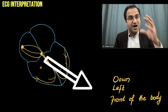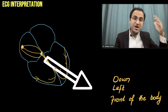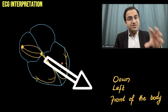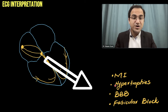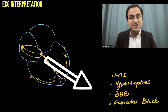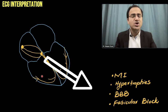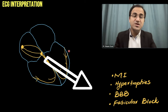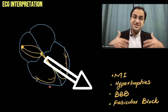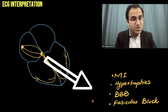Whenever there is any damage to the myocardium — any damage to any part of the heart — the electrical flow gets disturbed due to myocardial ischemia, hypoxia, or hypertrophies. These things disturb the normal flow of current and result in deviation of the main vector. This is called axis deviation, and it can occur due to myocardial infarction, hypertrophies, bundle branch block, or fascicular blocks. For example, if ischemia is on the right side, the right side doesn't contribute current, so the axis deviates left. If ischemia is on the left side, the axis deviates right.